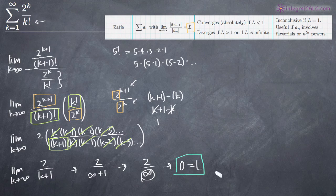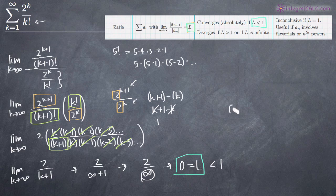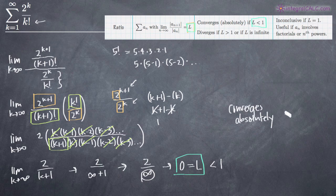Looking at the definition of the ratio test: we took 2 to the k plus 1 over k plus 1 factorial, divided by the original function, simplified, and found L equals 0. The ratio test tells us that if L is less than 1, the series converges absolutely; if L is greater than 1, the series diverges; and if L equals 1, the test is inconclusive. Since L equals 0, which is less than 1, this series converges absolutely.